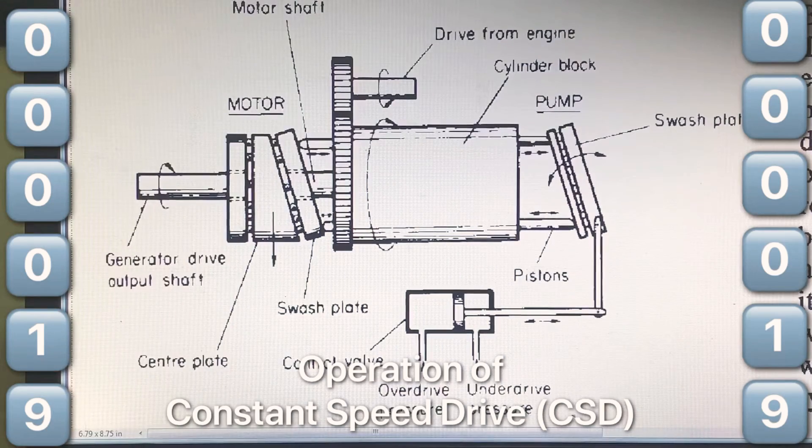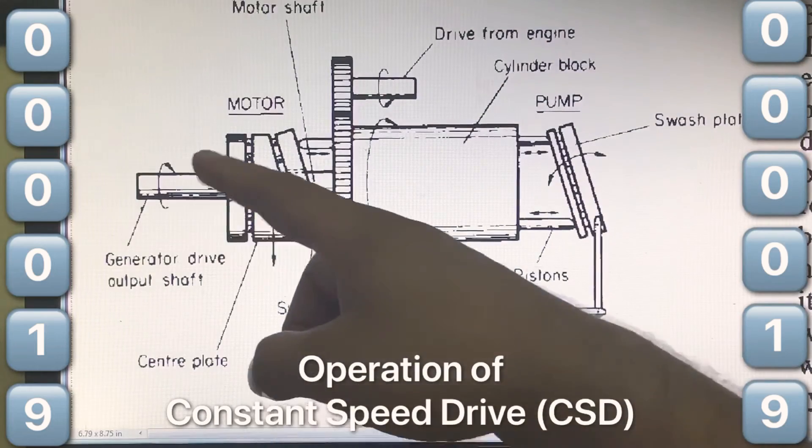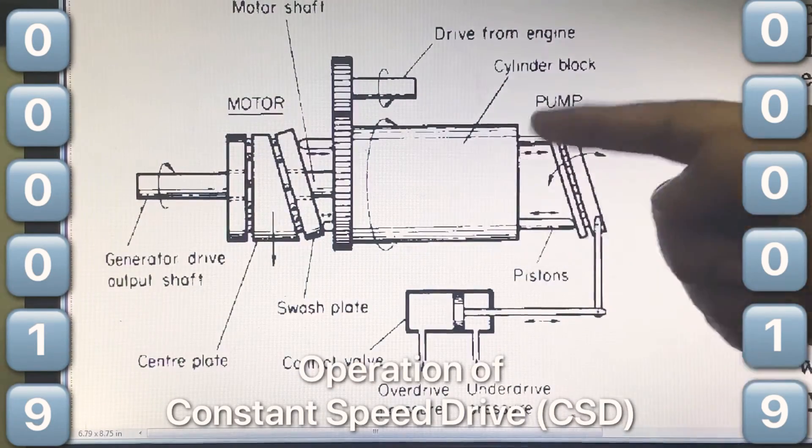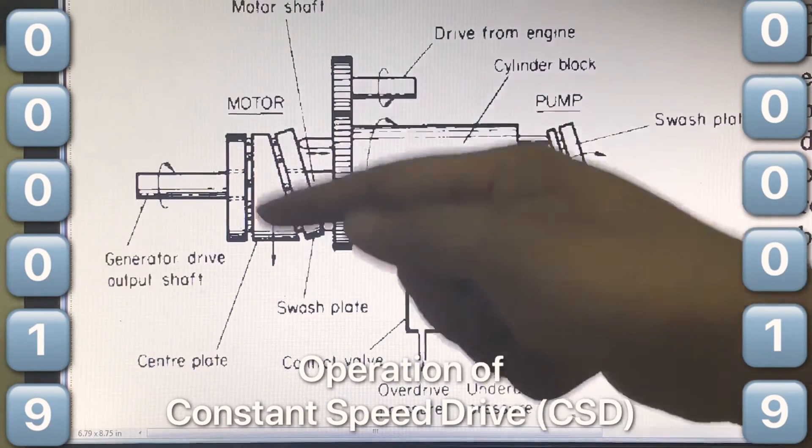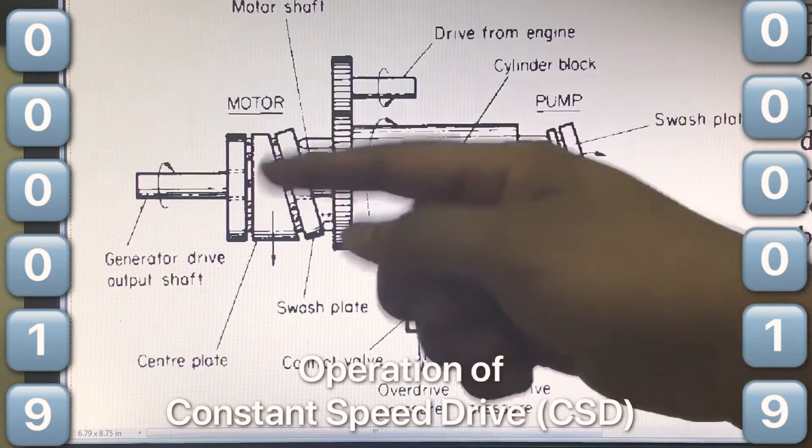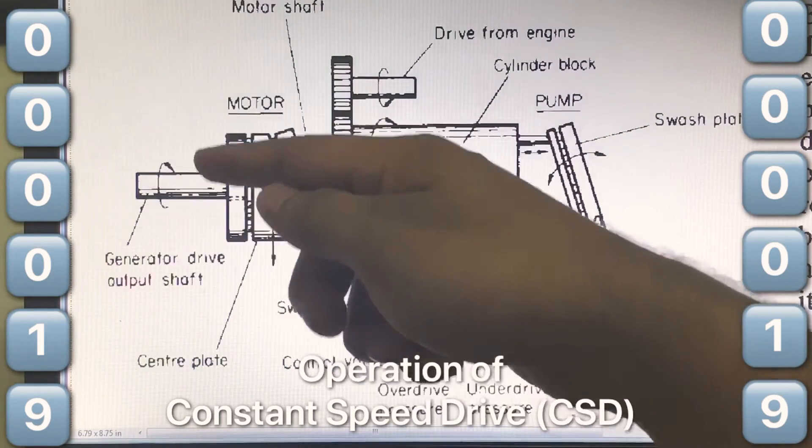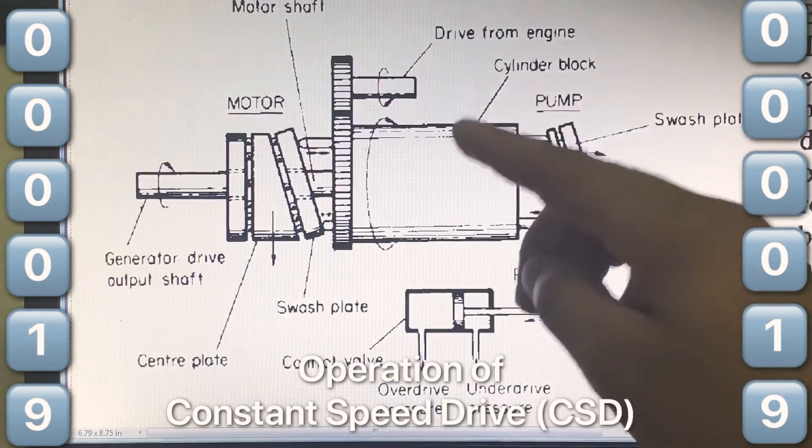If the engine output drive or input to CSD is lesser than the required generator speed, then pressure in this pump increases to vary its swash plate angle. That is the hydraulic motor will turn at a higher speed that is greater than the input drive. And this will maintain output speed which is equivalent to the required generator speed. This is called as overdrive condition.